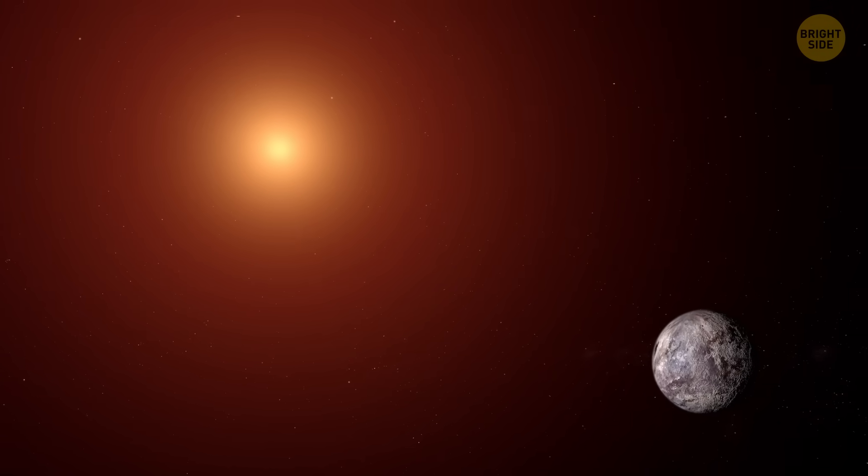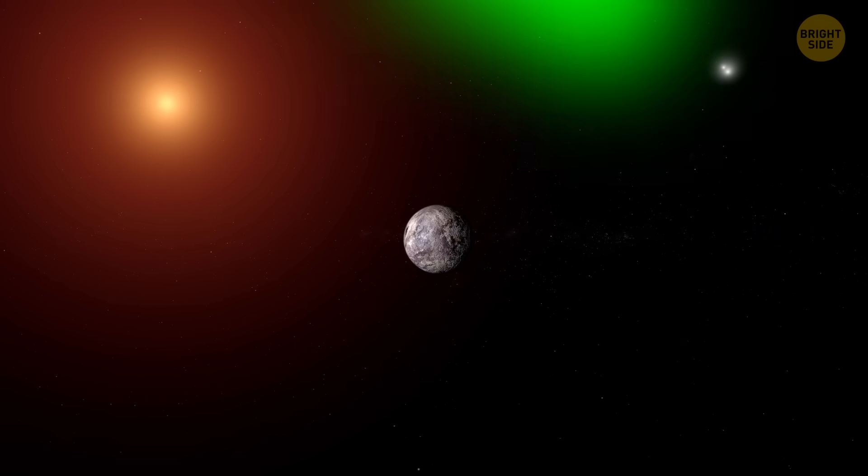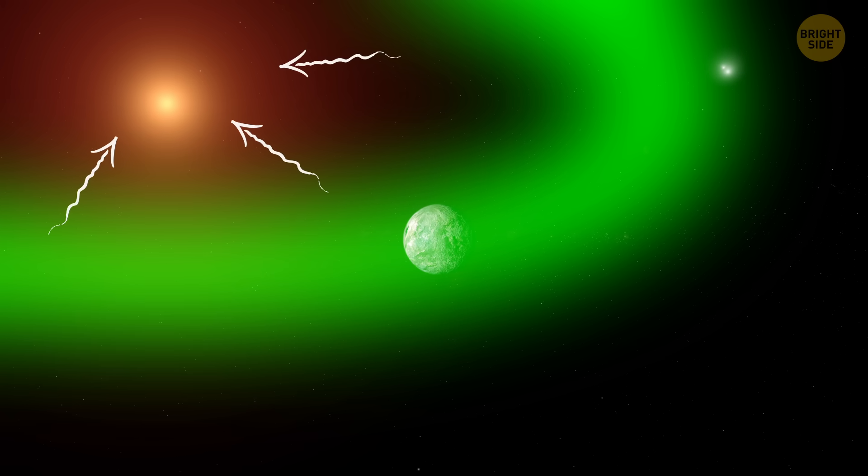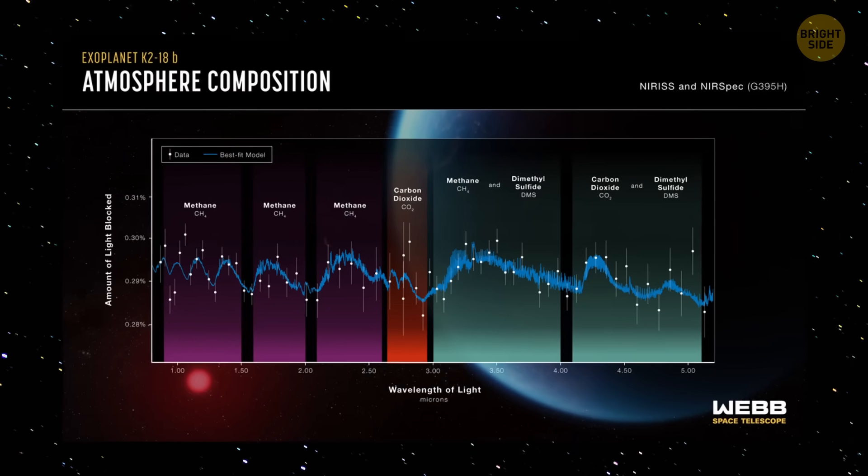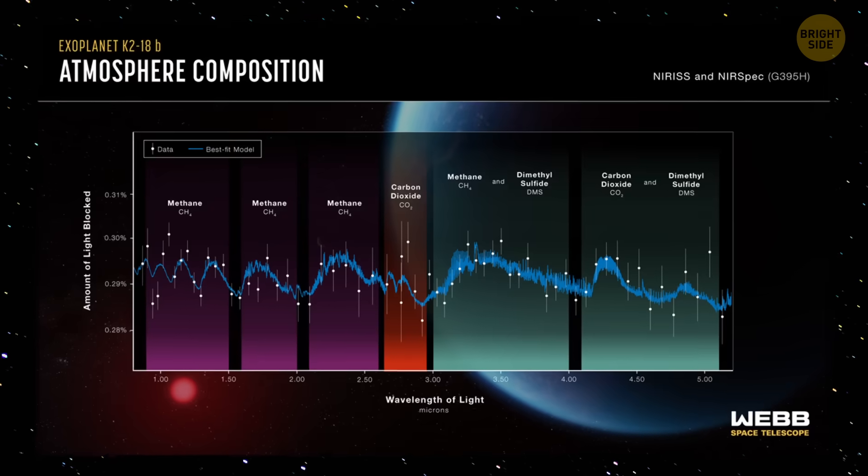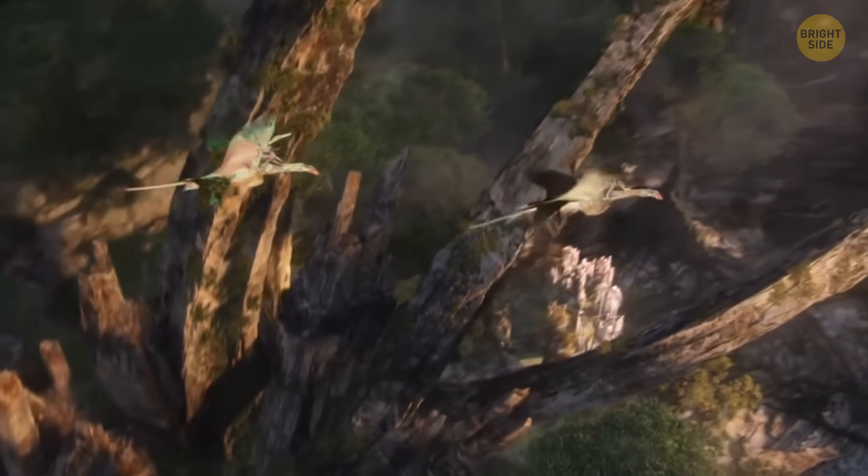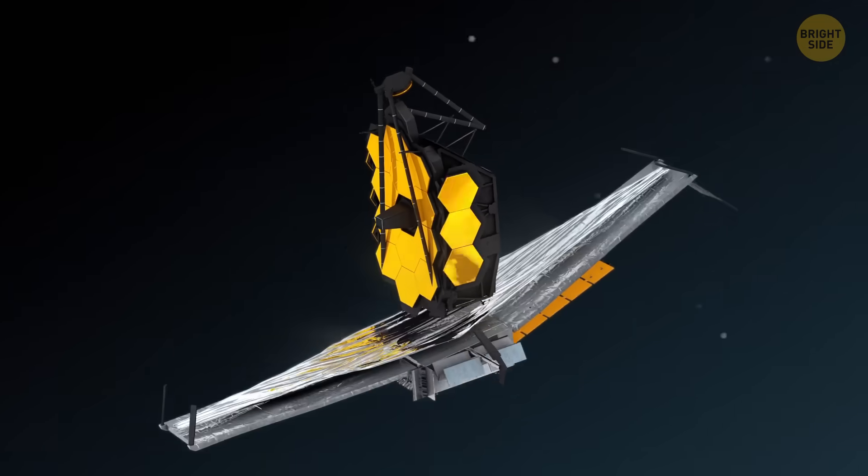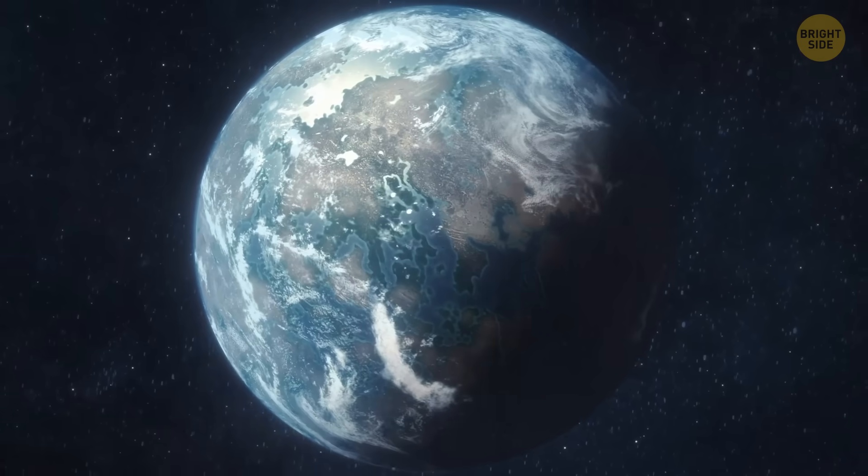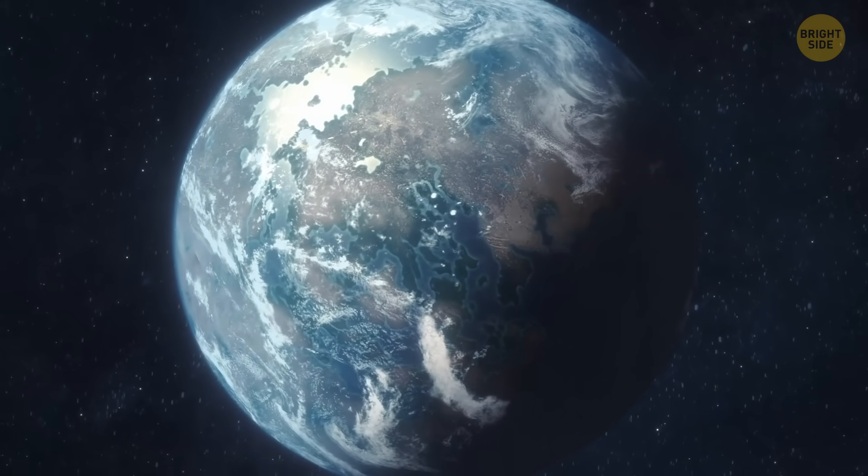The star itself is a red dwarf, so it's cooler than our sun. But that just means the habitable zone is tucked in closer. If we ever detect an atmosphere around L98-59F, it could reveal gases like oxygen or methane, which are signs of life. Scientists are already itching to point Webb at this planet and try to sniff its air. This could be one of the best candidates for finding another Earth-like world.